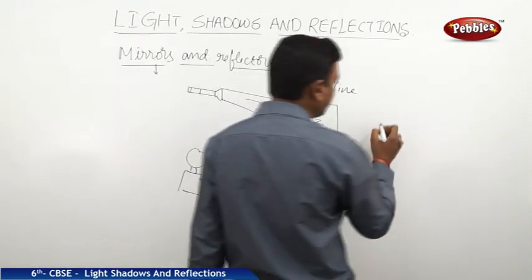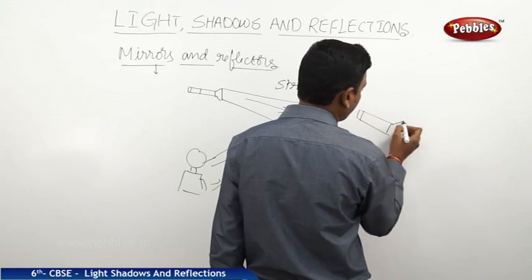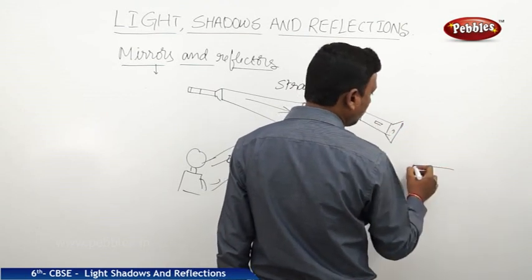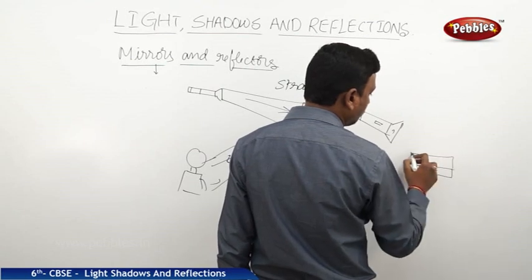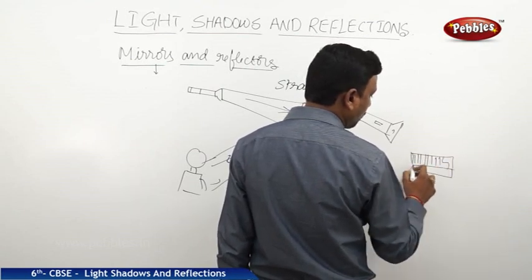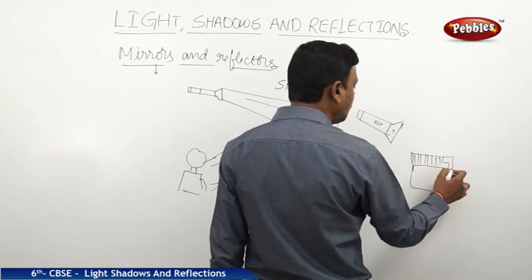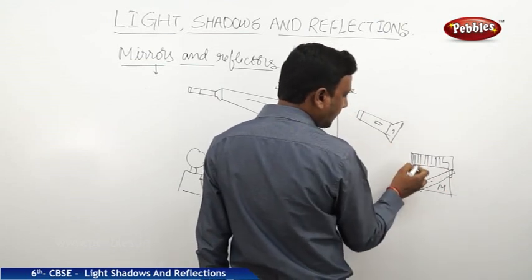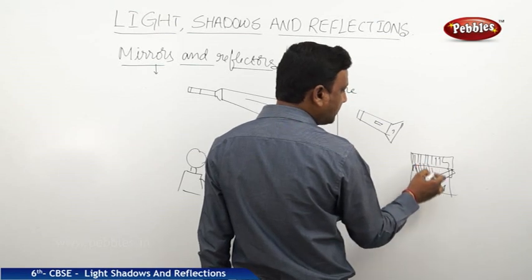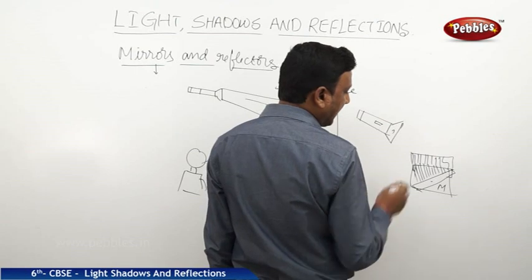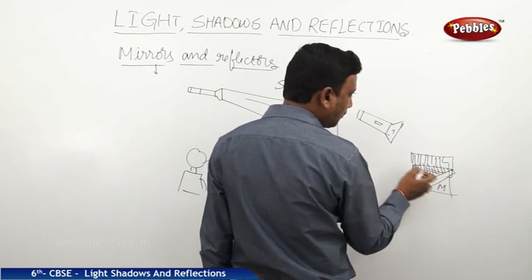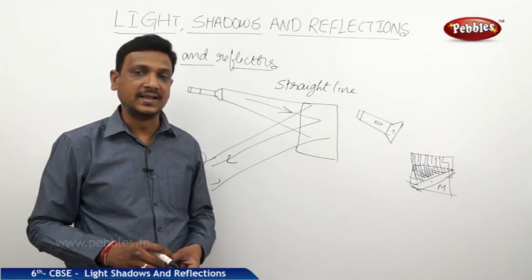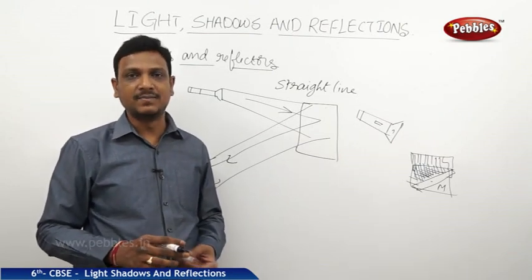Here is one more activity. You can take a torch and focus its light onto a cardboard where you have placed a comb and a mirror M. The light passes through the teeth of the comb and forms shadows. The light falling on the mirror is also reflected and forms shadows. By this experiment we can confirm that light travels in a straight line and gets reflected by mirrors.